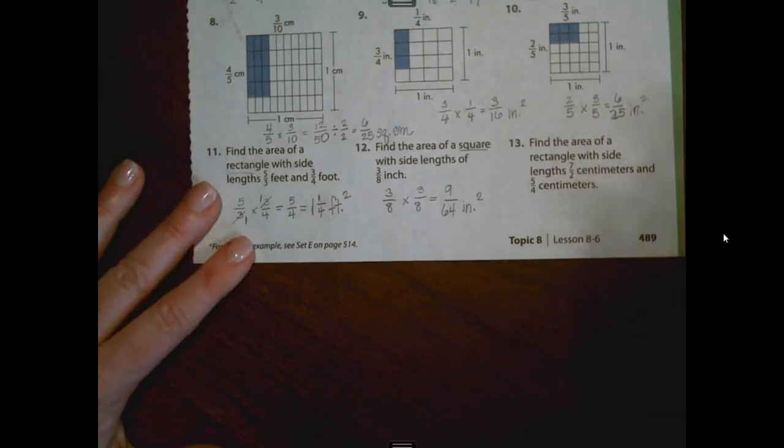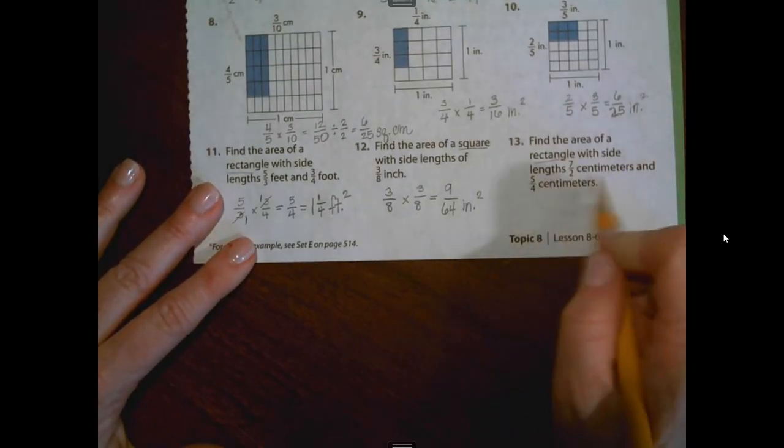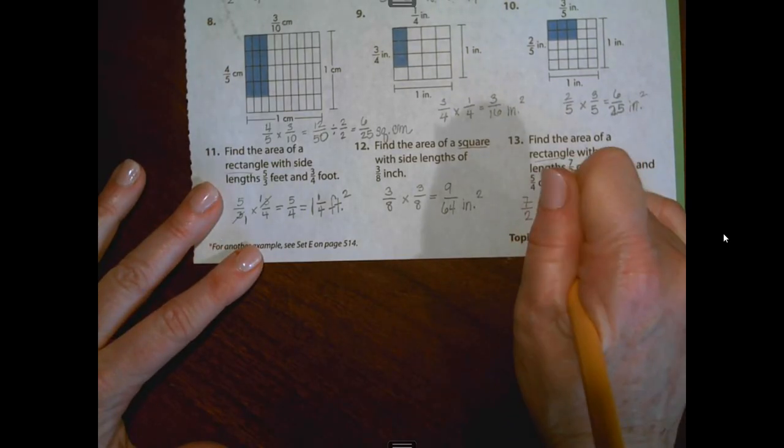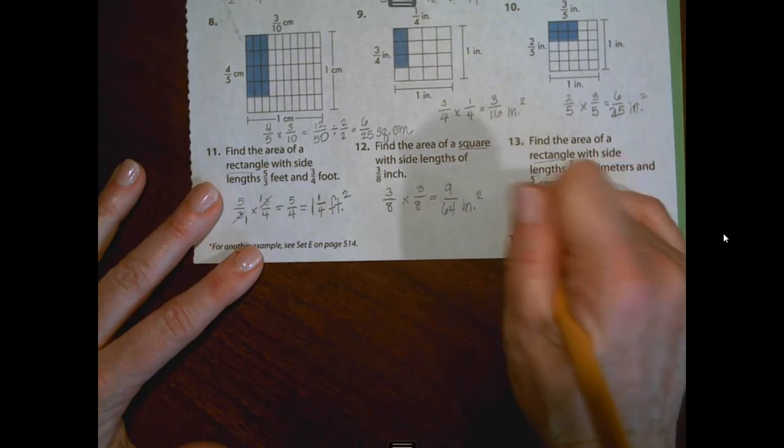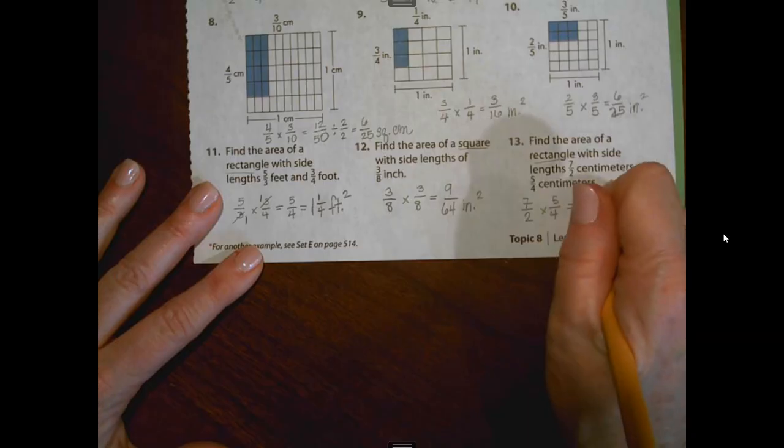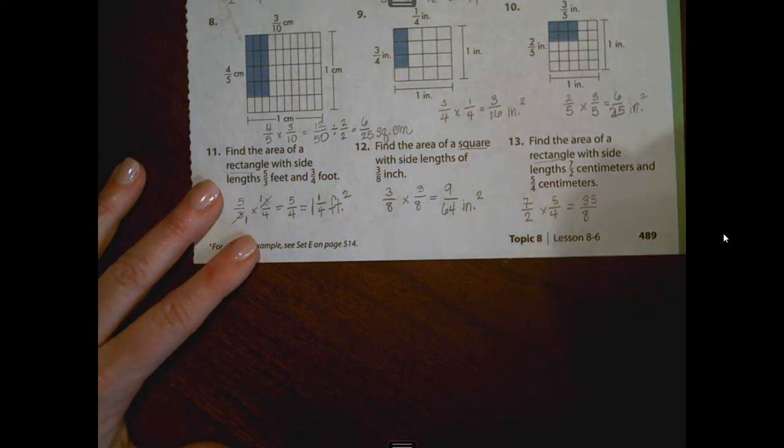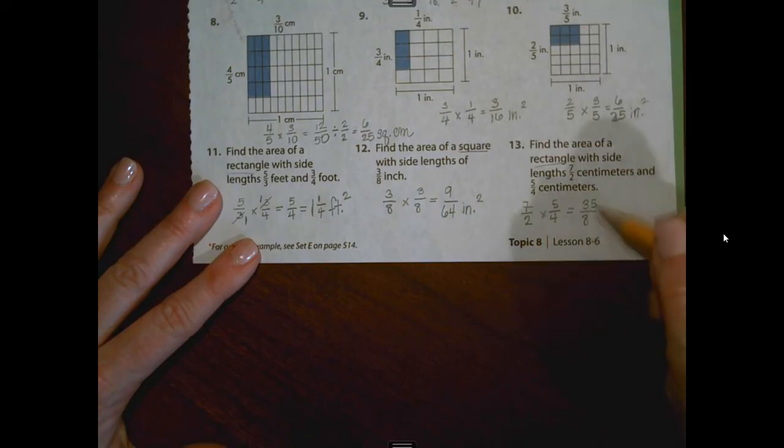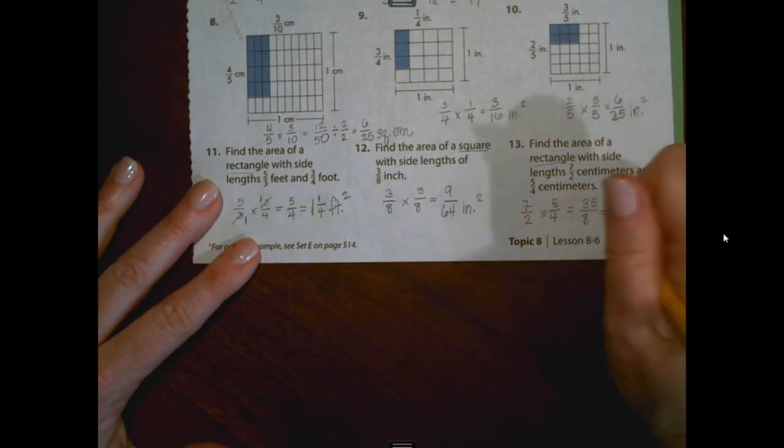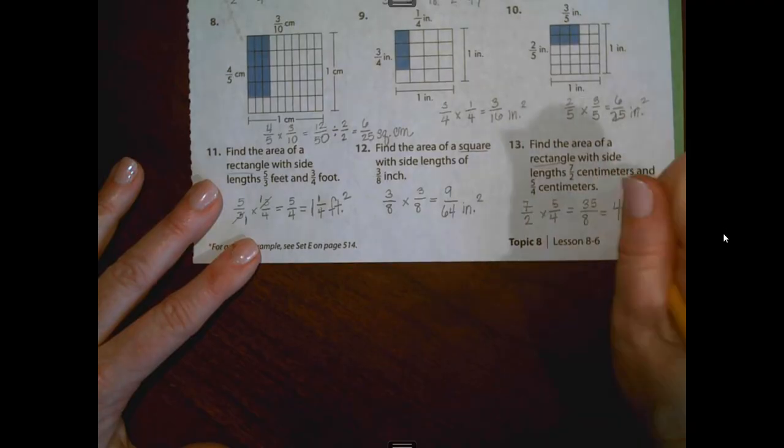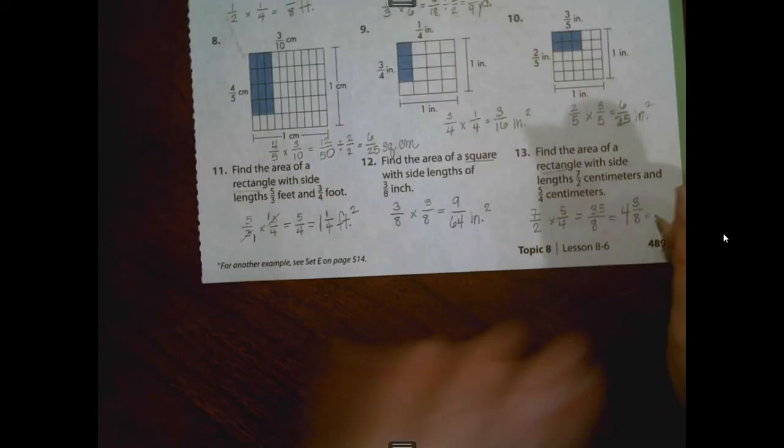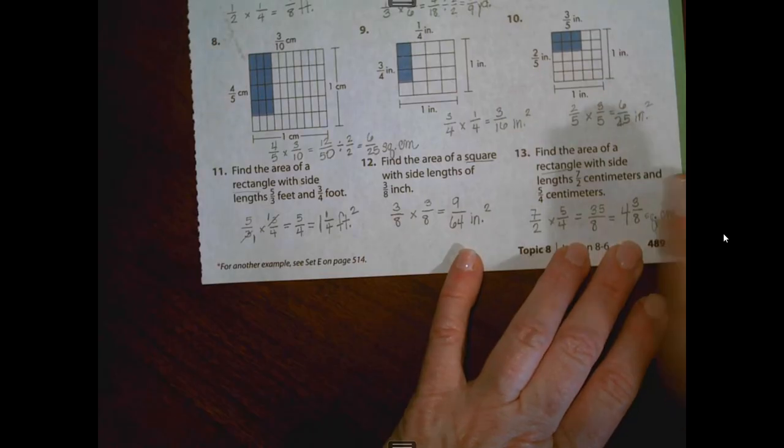Number thirteen, find the area of a rectangle with side lengths of seven-halves centimeters and five-fourths. So let's just set it up as seven-halves times five-fourths. I'm looking. I don't see any way to cross-reduce, so let's just multiply numerator times numerator, denominator times denominator. I get thirty-five-eighths. That is more than one whole, so let's divide it out and see what mixed or whole number I get. Eight goes into thirty-five four times. Four times eight is thirty-two, so I have three left over. That's my numerator and I'm working with eights, so I have four and three-eighths square centimeters for my answer.